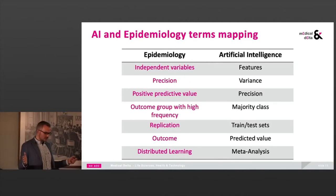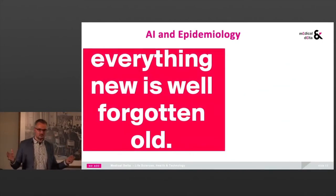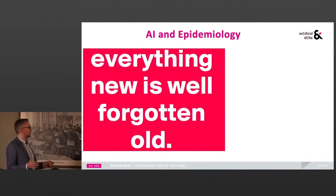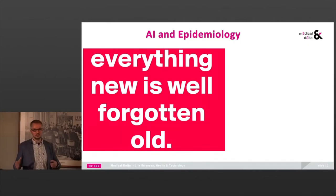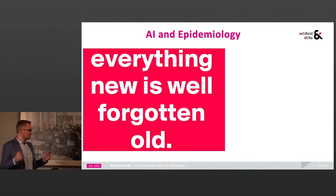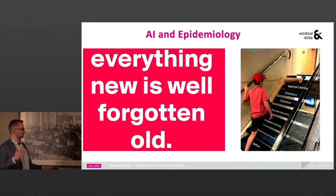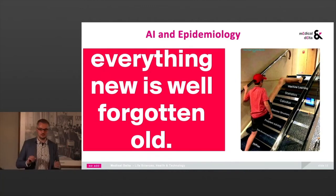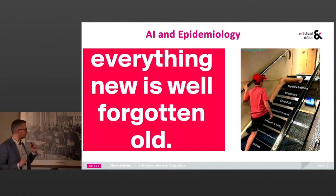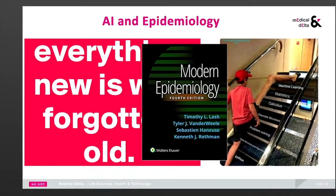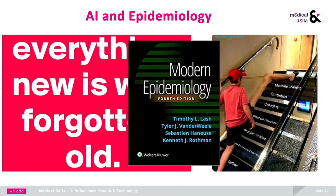I like this quote: everything new is well forgotten old. That's why you should pay attention to what was published and done before in the community. It's also important to have an interdisciplinary team when you work on a project. When people jump into machine learning and AI, they have to learn coding, data structure, calculus, statistics — but somewhere in there should be epidemiology, and people are jumping over it. I can recommend a really good book: 'Modern Epidemiology' — for everyone to read. You can get a lot of inspiration from it. Thank you for your attention.